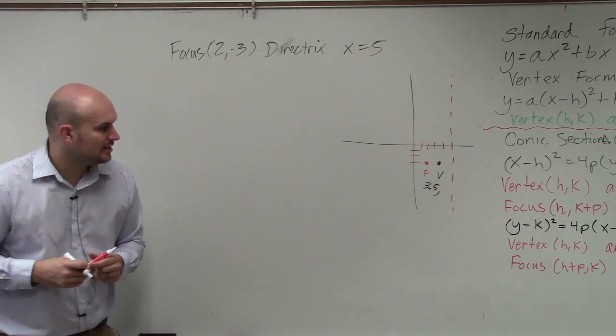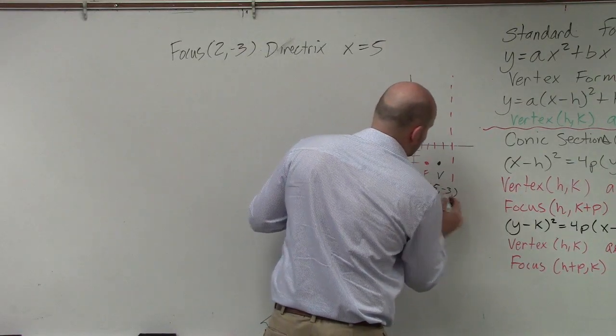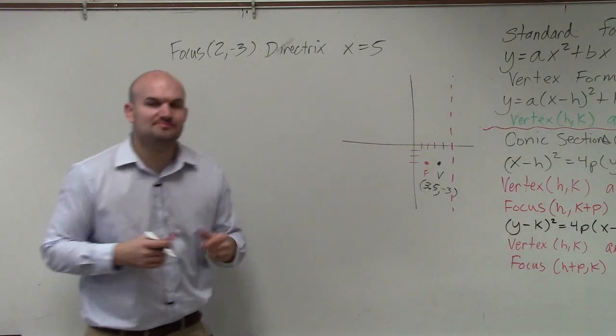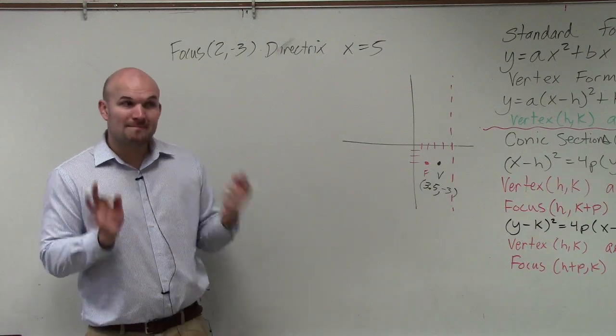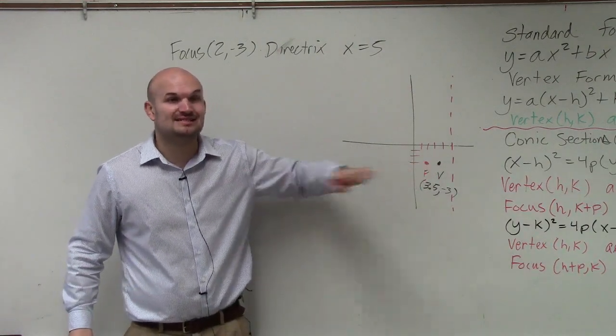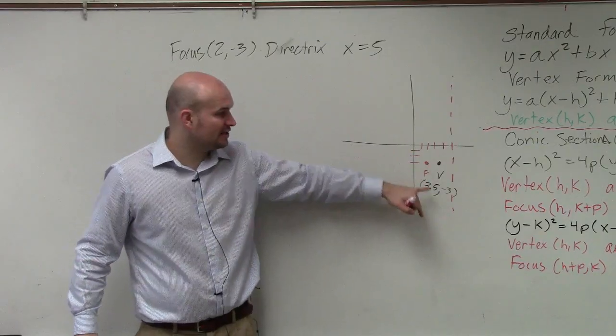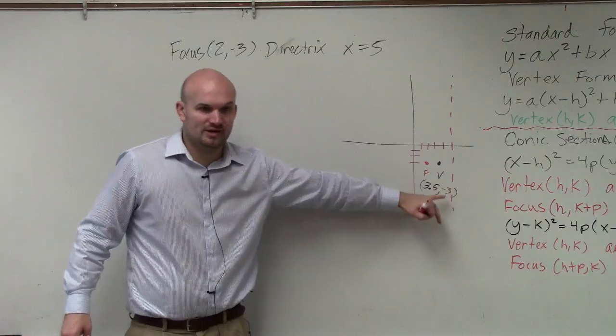And then what is going to be the y-coordinate of my vertex? Negative 3. The one thing I didn't talk to you guys about, or I didn't make sure I went over, remember that the focus and the vertex are always on the same axis of symmetry. They're always on the same axis of symmetry. So therefore, they're going to have the same coordinates.